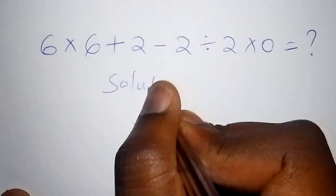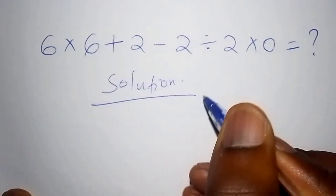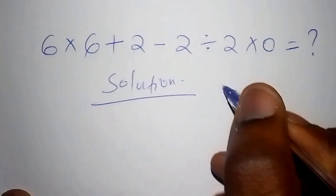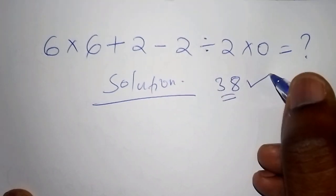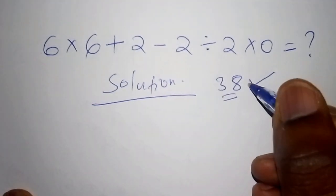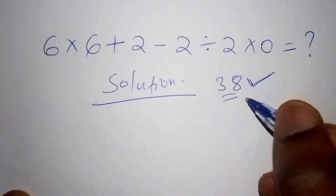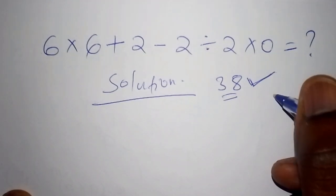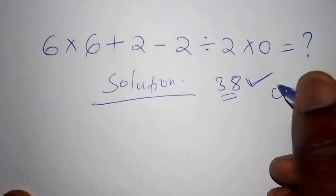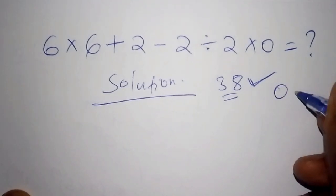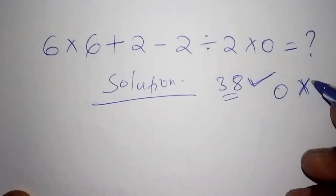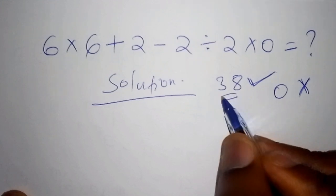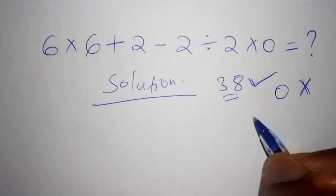If you got the answer as 38, then you are a nice student — whether you are currently a student or not. If you got the answer as zero, it means there is a step that you worked out wrong, so the answer of zero is automatically wrong. If you got 38, it's correct. Let me show you how it is worked out.